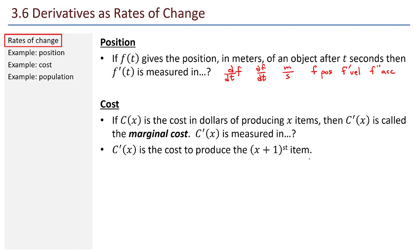We use derivatives in the context of cost. Let's suppose that C(x) is the cost in dollars of producing x items. The derivative, C'(x), is called the marginal cost. So, if I took the derivative of a cost function, that would be dC/dx. C is measured in dollars, and x is just counting the number of items. So, dollars per item. And that brings us to this second bullet point. If C'(x) is the cost to produce the x+1st item, it's a rate of change. It says, as x increases by one, how much will the cost increase, the total cost? So, it is the cost to produce the x+1st item.